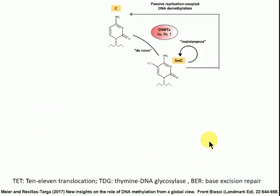So far, methylation has been seen as a stable epigenetic change — once it happens, it stays and can't be removed. But now we know that's incorrect. Methylation can be removed. The reason they thought it couldn't be removed is that the methylation reaction uses quite a lot of energy, so it seemed contradictory to methylate something and then remove it. They also hadn't figured out what enzyme is responsible. Now we know there are actually two ways of removing DNA methylation.